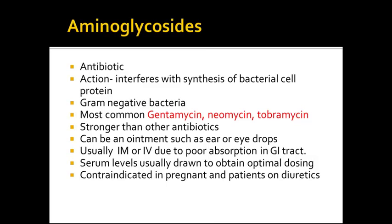Diseases that aminoglycosides are very effective against include TB, the plague, bacterial endocarditis, HIB, pneumonia, and severe respiratory tract infections. As you can tell, these are severe and resistant diseases, so we would use a strong antibiotic such as an aminoglycoside.